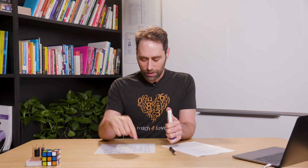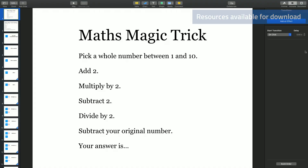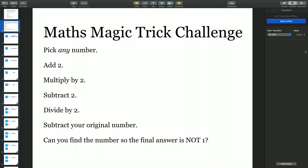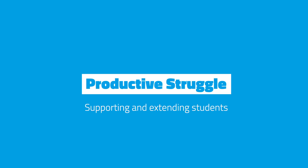As soon as students are hooked on this question and really curious about what's going on, and as soon as they have a couple of numbers to try out, we can let them go on their own. If you'd like to launch this using computer slides, I've also included a slide which gives the statement of the problem — the statement of the trick — in two slides. The first has students pick a whole number between one and ten, with the surprise of everyone getting the same answer. Then another slide frames this as a challenge: pick any number and find one where you apply this trick and the answer won't be one.